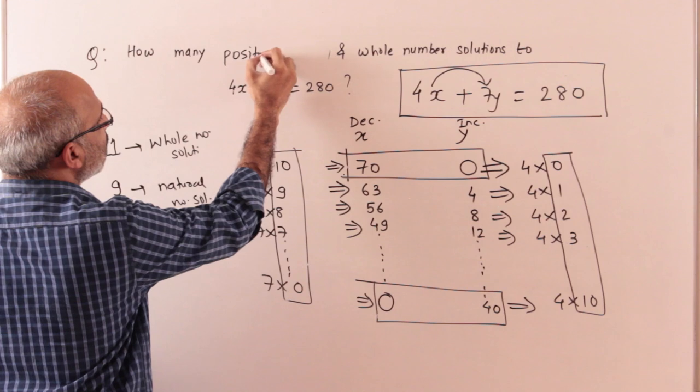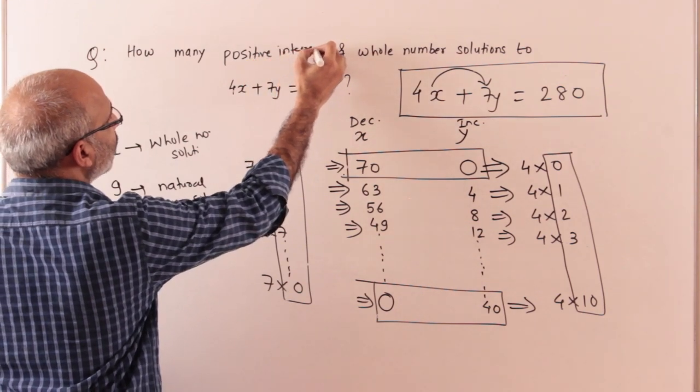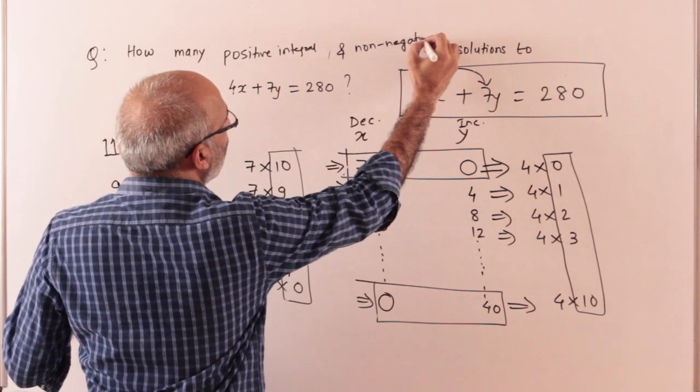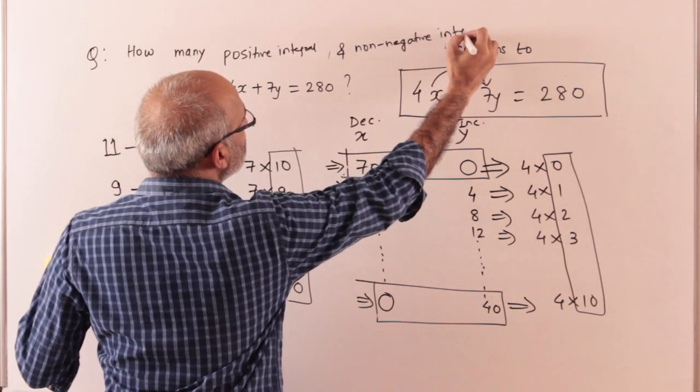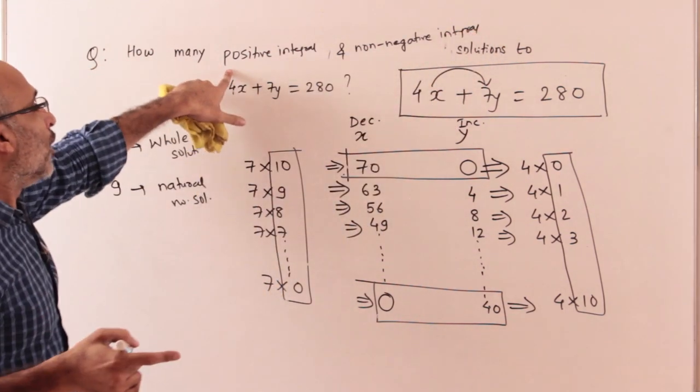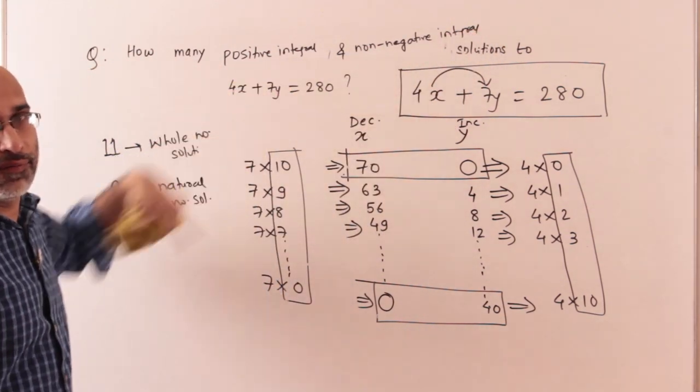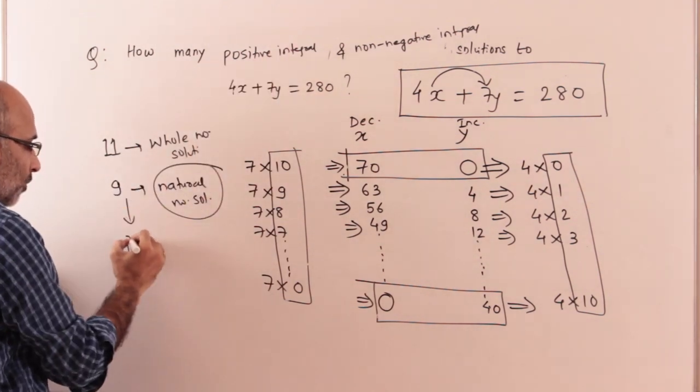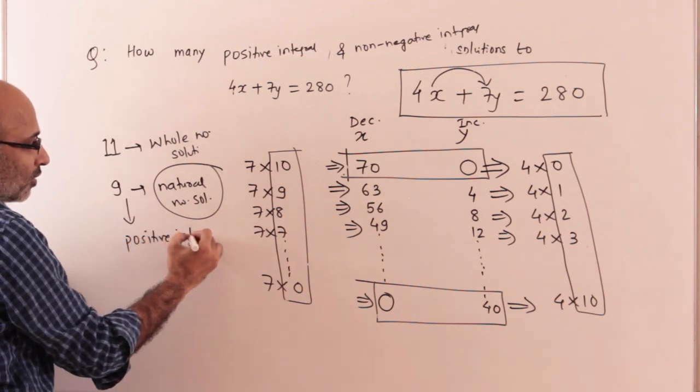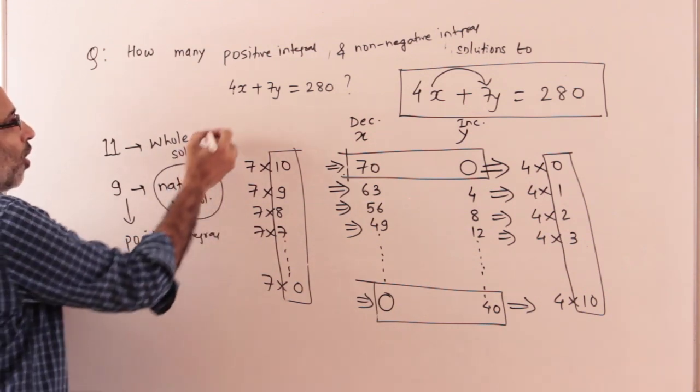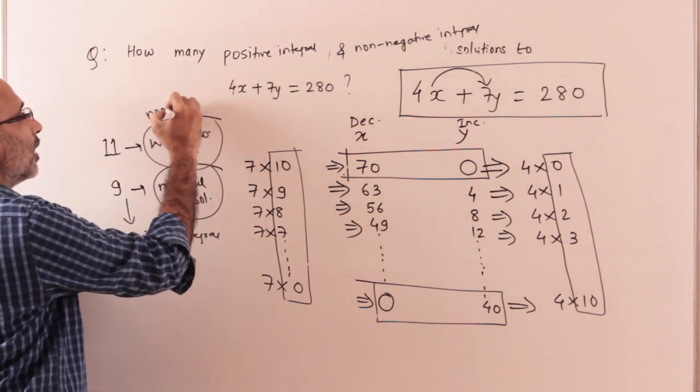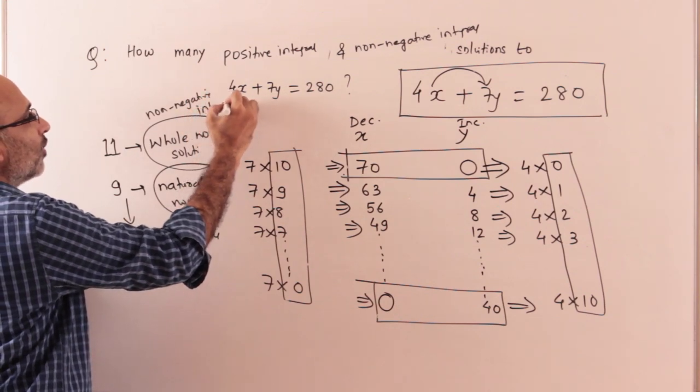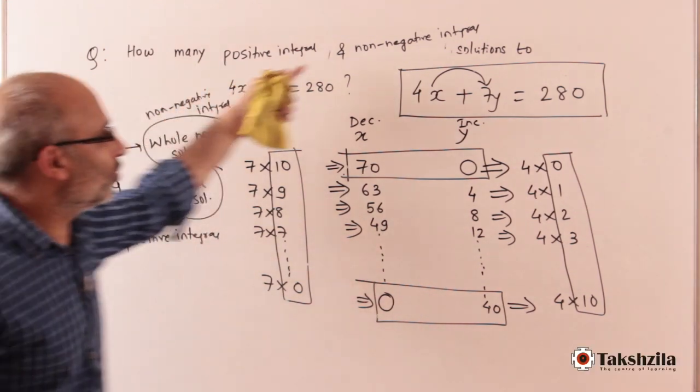There will not be a natural number; you will call it a positive integral solution. And whole number will be a non-negative integral solution. A positive integer is a synonym for natural number. Natural number solution and positive integral are same. Whole number solutions are same as non-negative integral.